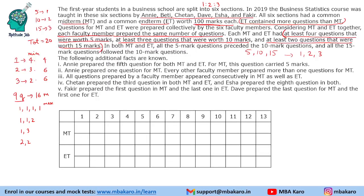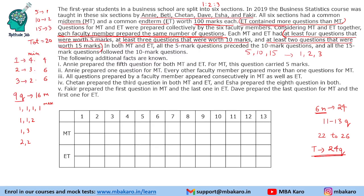Each faculty member prepared the same number of questions, and there are 6 faculty members. The total number of questions across both papers ranges from 22 to 26. The only multiple of 6 in this range is 24, so there are 24 total questions. Since ET had more questions than MT, ET has 13 questions and MT has 11 questions.